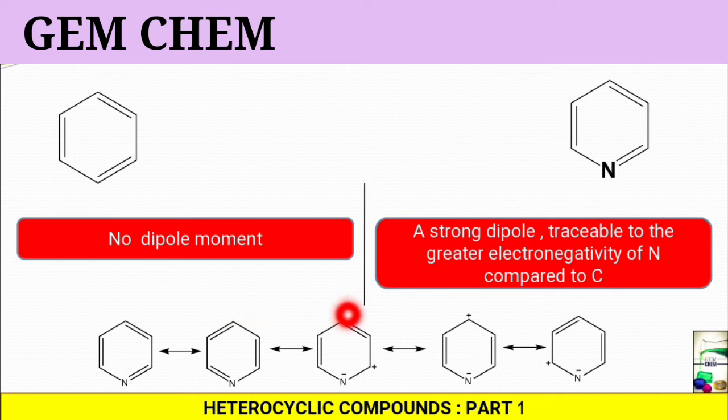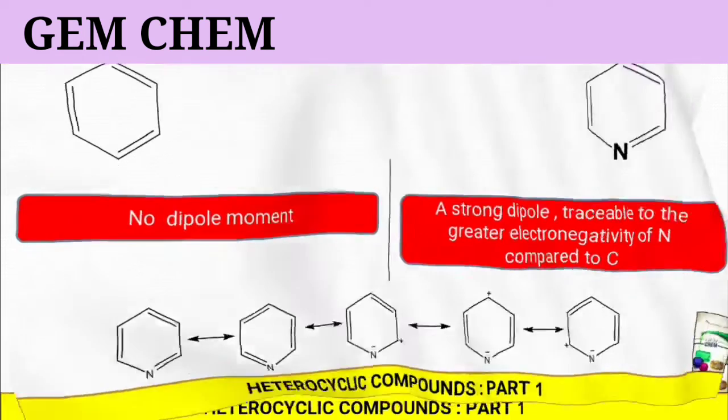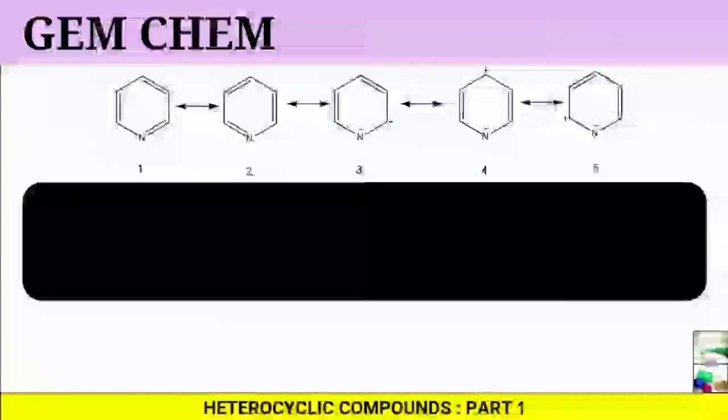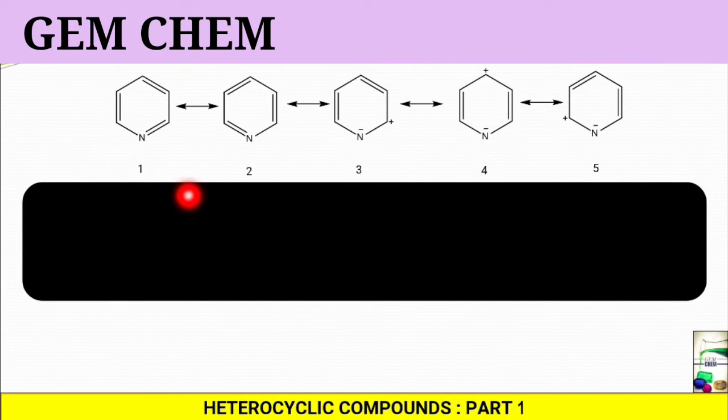As you can see in the last three structures we are getting positive-negative charge separation, and these are two Kekule structures.